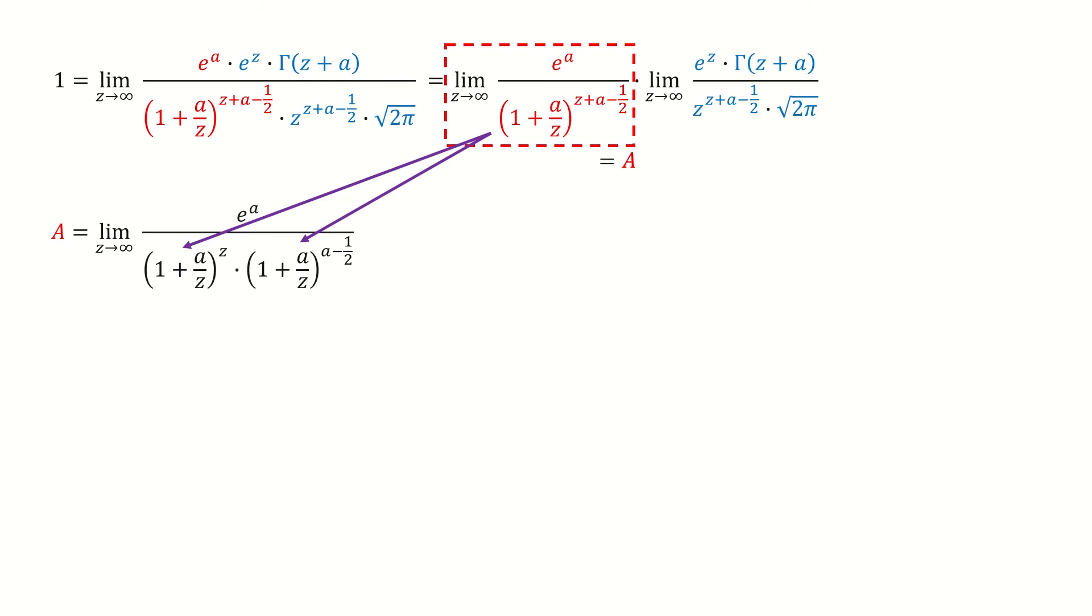We write the denominator in this way. Because this function is continuous, we put the limit in the denominator. Then we write it into the product of two limits.